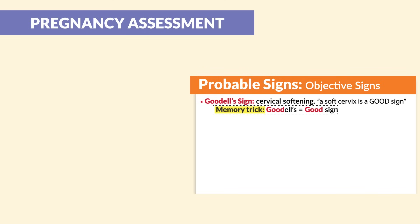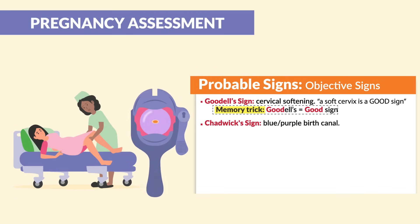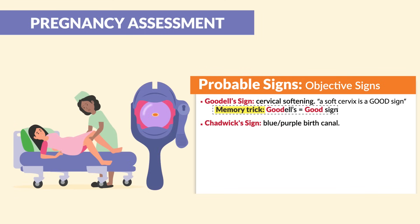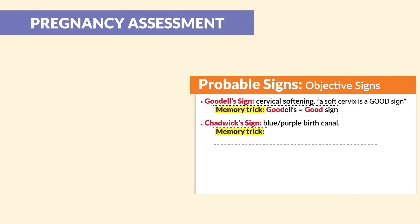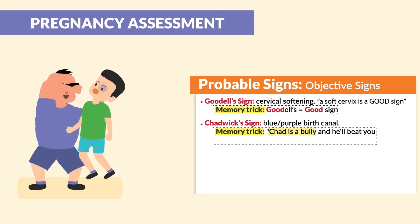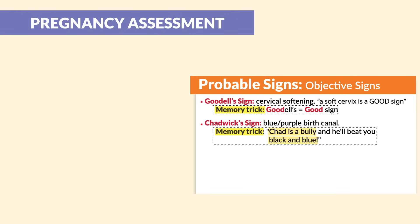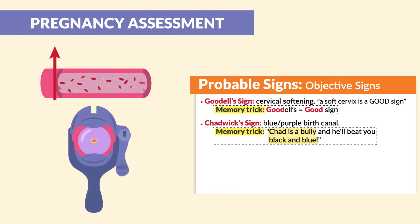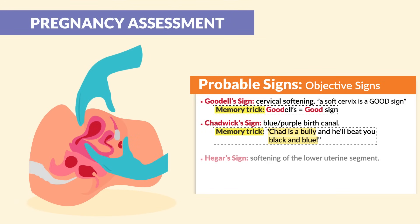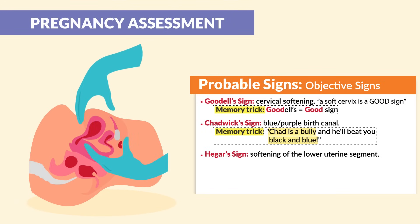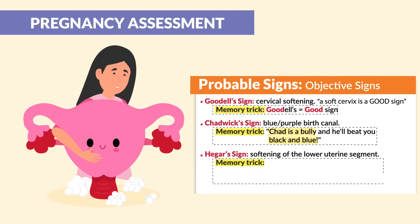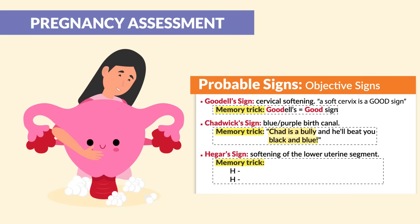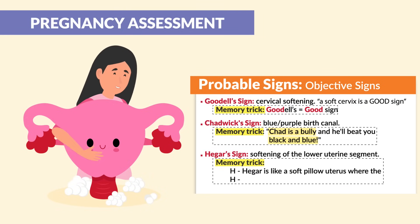The next key term is Chadwick sign — the blue or purple discoloration of the birth canal. A memory trick: Chad is a bully and he'll beat you black and blue. In true pregnancy, this dark bluish or purplish discoloration is caused by increased blood flow to the area. Lastly we have Hegar sign, which is the softening of the lower uterine segment. The memory trick uses the double H's — Hegar is like a soft pillow uterus where the head goes.